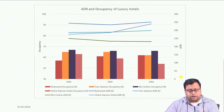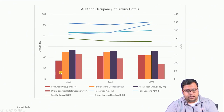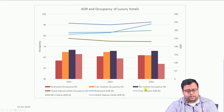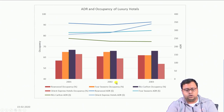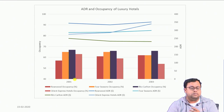Looking at the chart, there are 4 hotels. The bar charts show occupancy rates and the lines show average daily rate. Rosewood — the red, leftmost bar — had the lowest occupancy rate in 2001–2002, slowly going up. Four Seasons was quite high then dropped. Ritz-Carlton was always the leader. Orient Express was slowly deteriorating. So Rosewood was improving but needed to do further better.